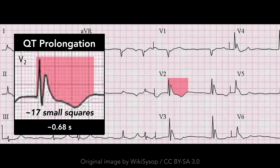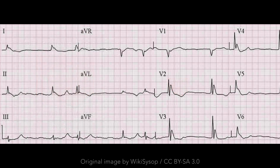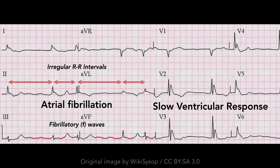The PR interval and P-waves cannot be assessed due to the underlying rhythm. In regard to the underlying rhythm, marked slowing of the heart rate can occur due to a variety of arrhythmias, such as sinus bradycardia, AV block, and atrial fibrillation with slow ventricular response. In this ECG, note the irregular RR intervals and fibrillatory waves of AFib, yet the slow ventricular rate.